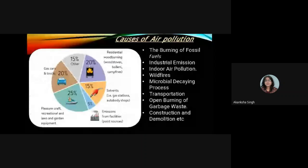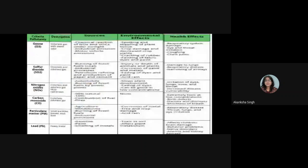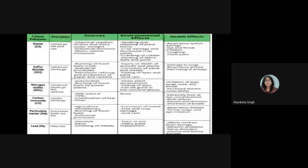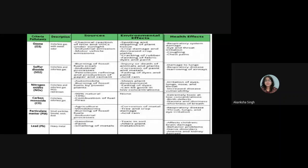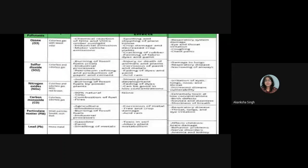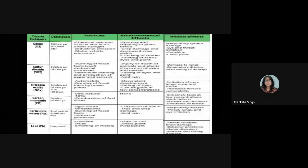Another table lists the criteria pollutants: ozone (O₃), sulfur dioxide (SO₂), nitrogen oxides (NOx), carbon monoxide (CO), particulate matter (PM), and lead (Pb). The table describes their appearance — for example, ozone is a colorless gas and sulfur dioxide is a colorless and odorless gas — along with their sources, environmental effects, and health effects. These criteria pollutants have major effects on both the environment and human health.